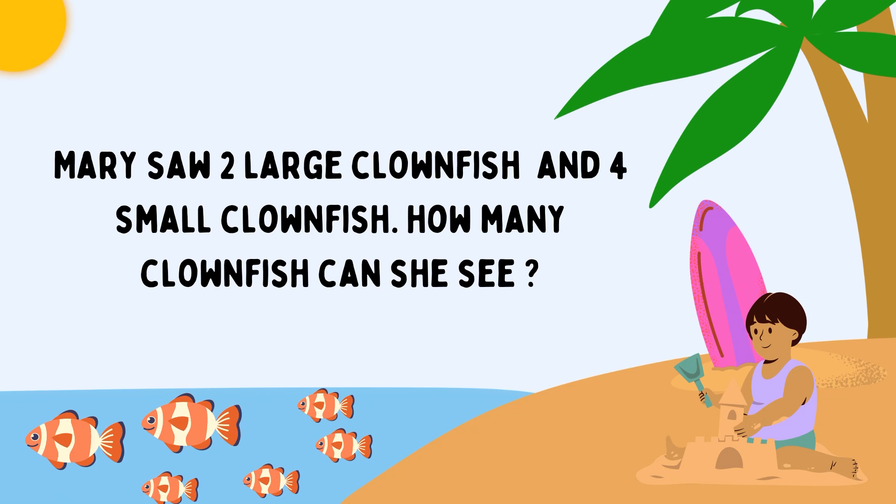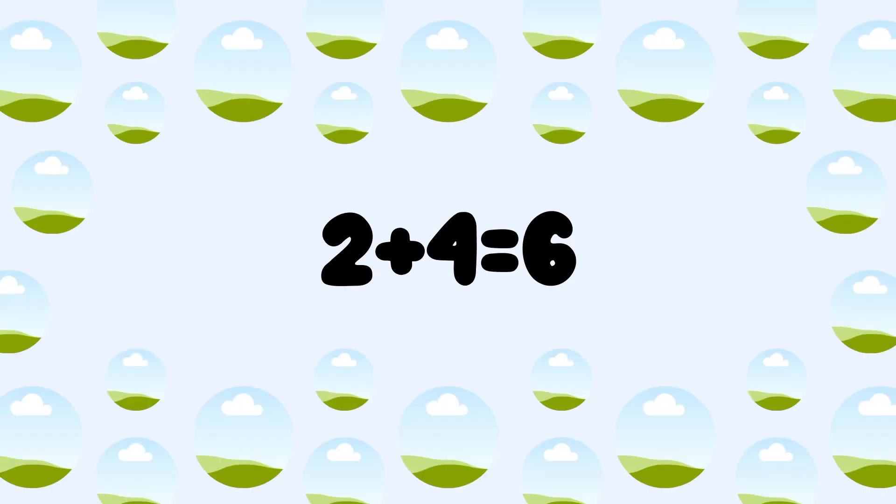Next one. Mary saw 2 large clownfish and 4 small clownfish. How many clownfish can she see now? 2 clownfish plus 4 clownfish. 2 plus 4 is equal to 6. Total 6 clownfish.